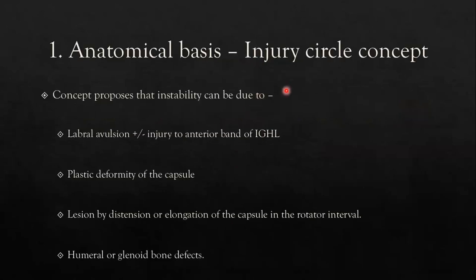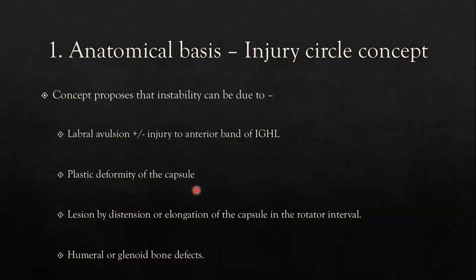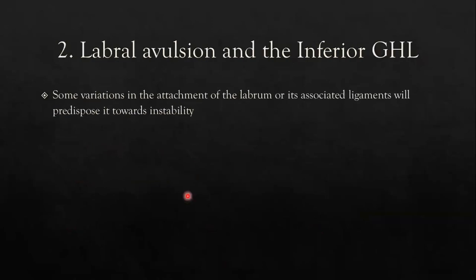An important concept in instability biomechanics is the injury circle concept: injury is never limited to one single component and will most likely have an associated component that must be actively looked for — similar to pelvic ring injury concepts. It may present with labral avulsion plus or minus injury to the anterior band of the IGHL, additional plastic deformity of the capsule, elongation of the capsule in the rotator interval, or humeral head or glenoid bone loss.